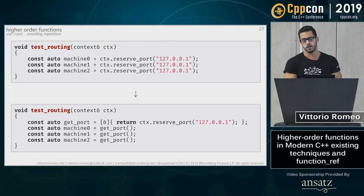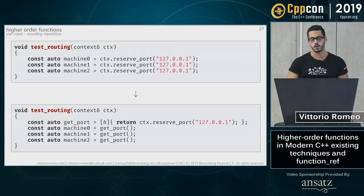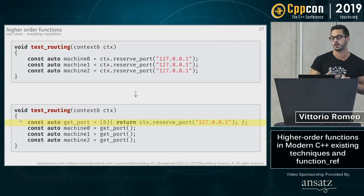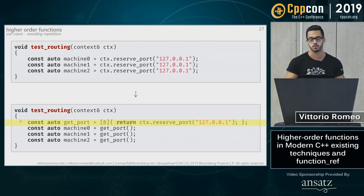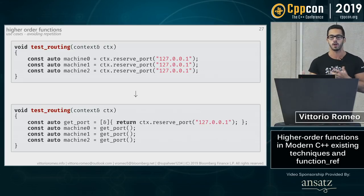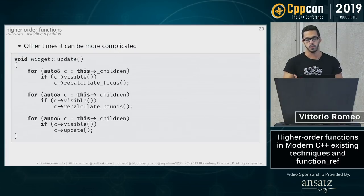Sometimes avoiding repetition is easy without even needing higher-order functions. For example, in an integration test spawning multiple machines and needing unique ports, instead of copy-pasting reserve_port with localhost over and over, you introduce a small local lambda called get_unique_port and call it each time. It's not a huge win, but if you ever change how you reserve a port — or want to log each acquisition — you now have one place to do it.